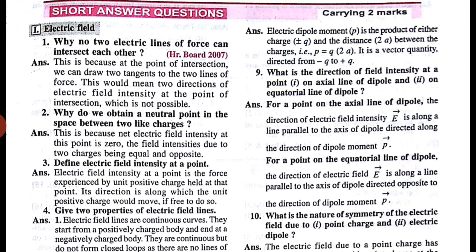Our first question is: why can no two electric lines of force intersect each other? We know that whenever two electric lines of force intersect at a point, there will be two tangents. The tangent gives the direction of the electric field. So if two electric lines of force intersect at a point, at that point of intersection there will be two tangents, meaning two directions of electric field, which is not possible because at a point there can be only one direction of electric field.